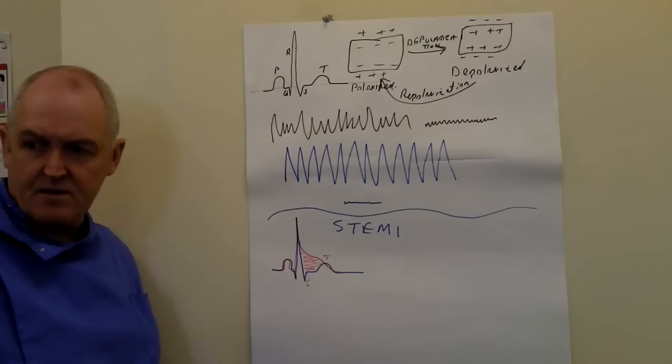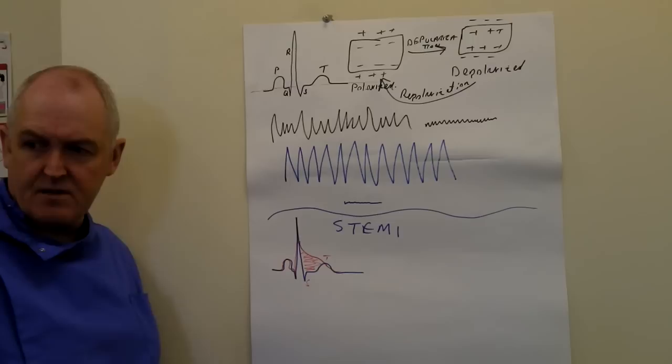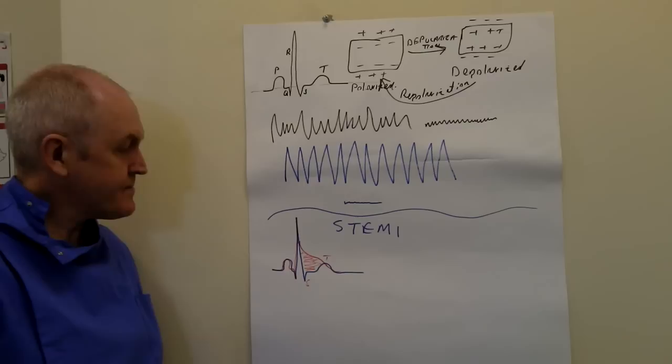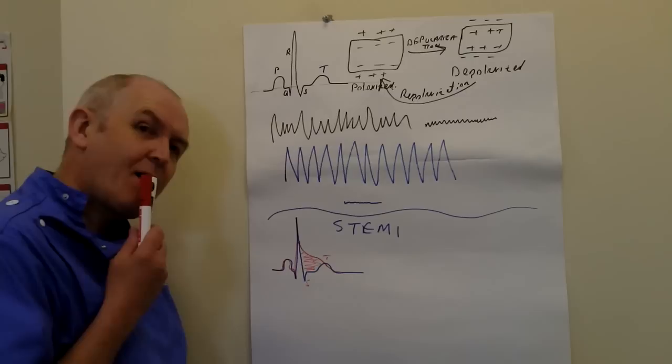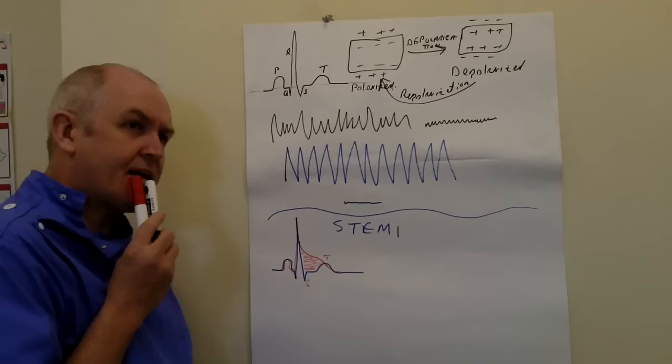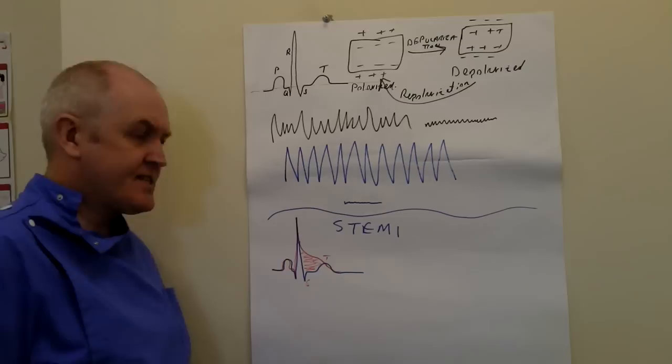So with a 12-lead ECG we can work out whereabouts in the myocardium the infarction is — whether it's an inferior myocardial infarction, an anterior lateral myocardial infarction, or whatever it is. The ECG can accurately tell which part of the heart it is — not by the timeline, but by the leads in which the ST elevation occurs. Remember, you're looking at the heart from different directions: AVR, AVL, AVF, leads 1, 2, 3, and the chest leads V1 through V6.